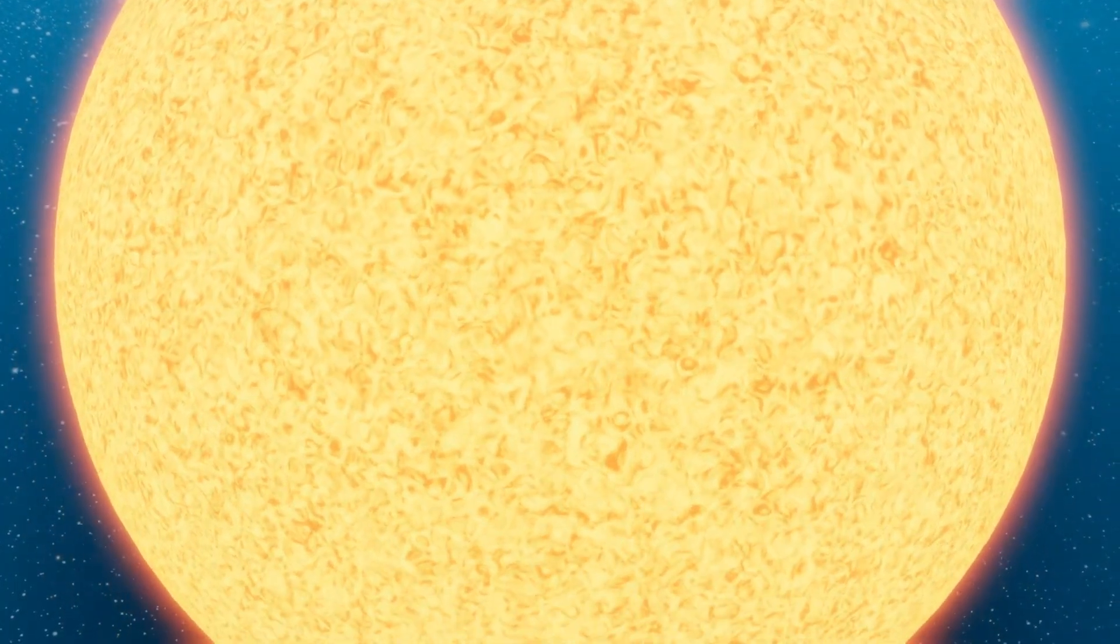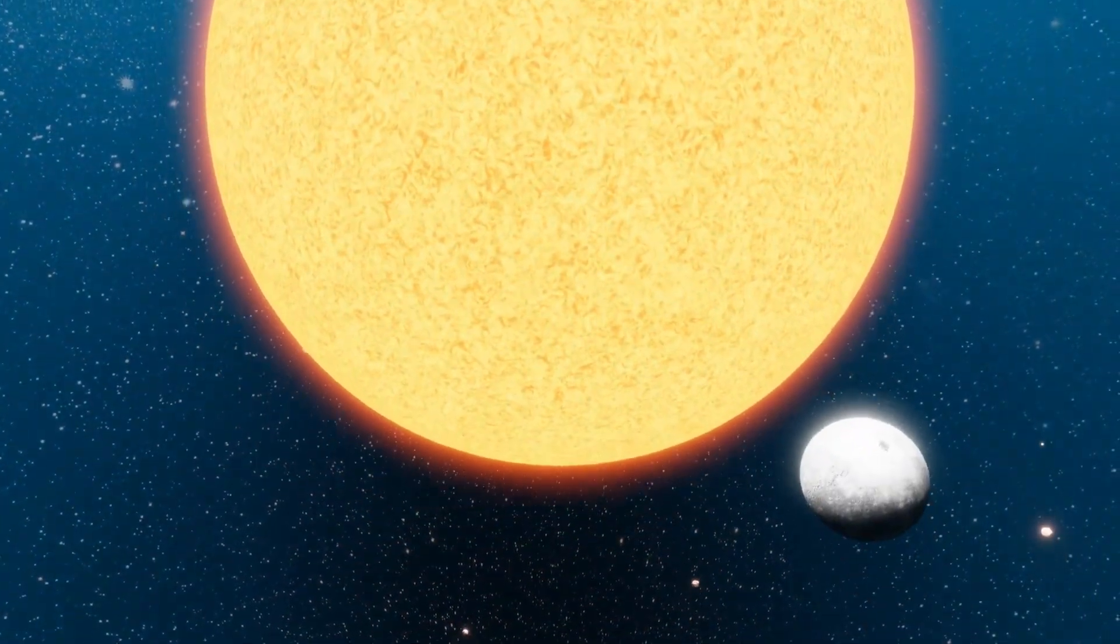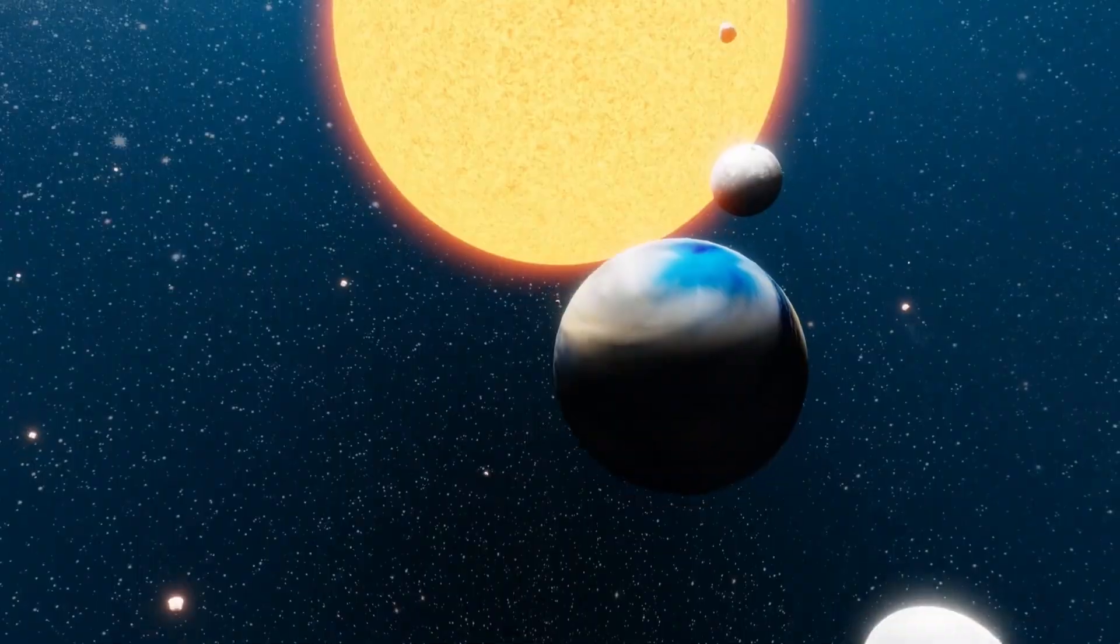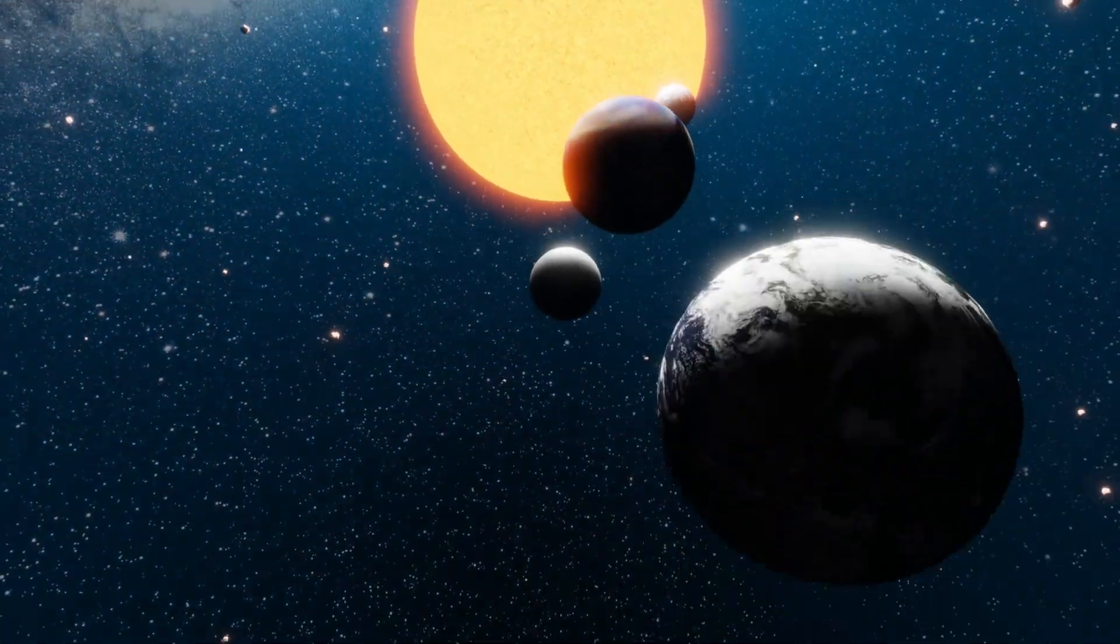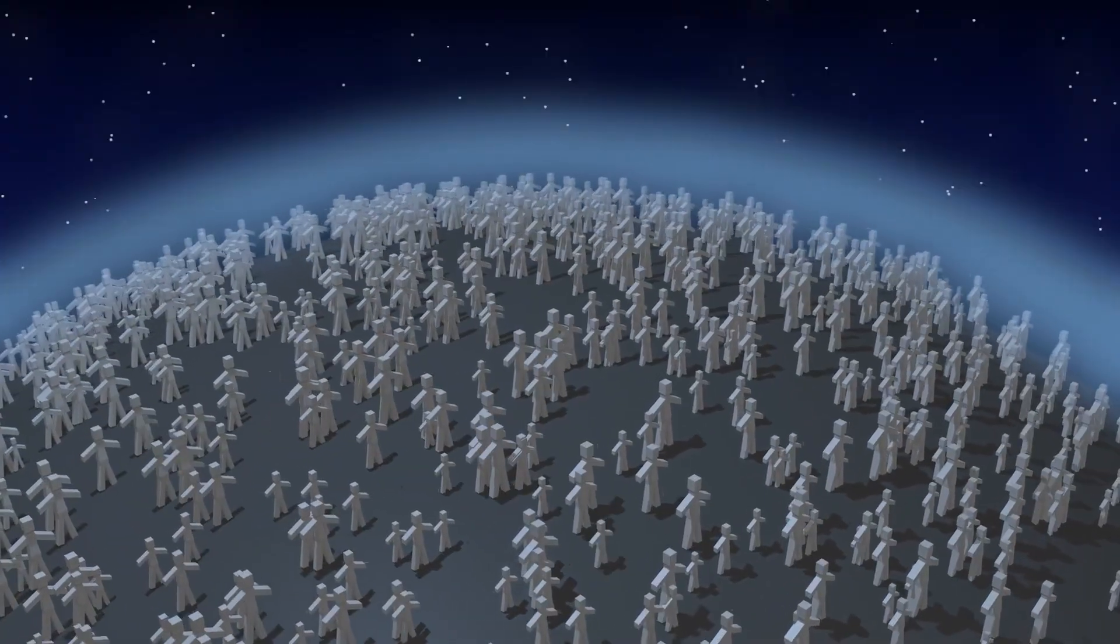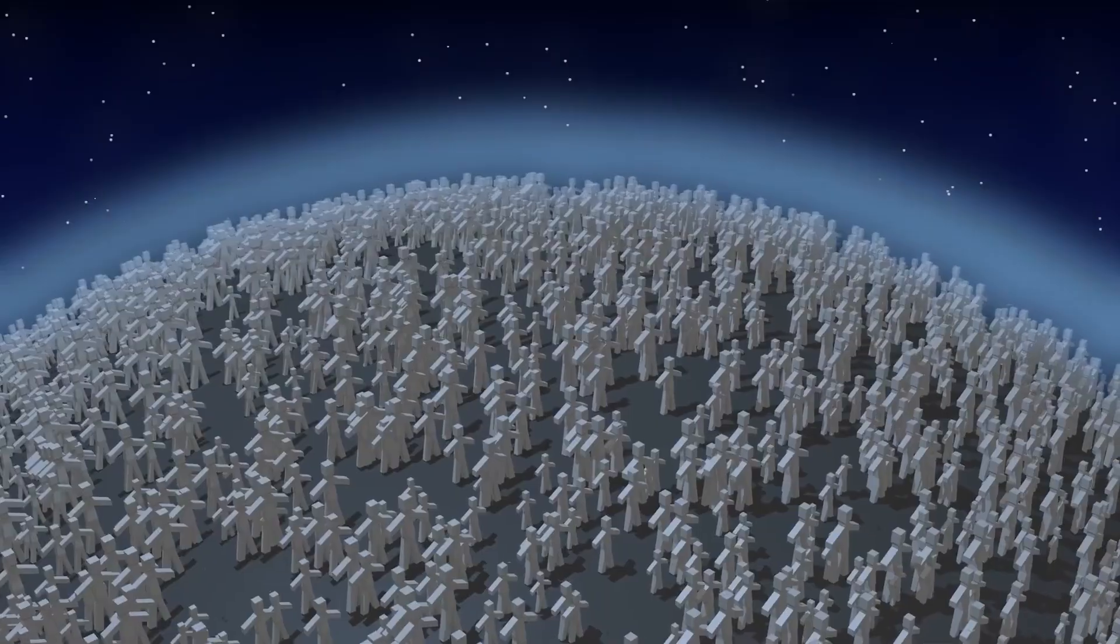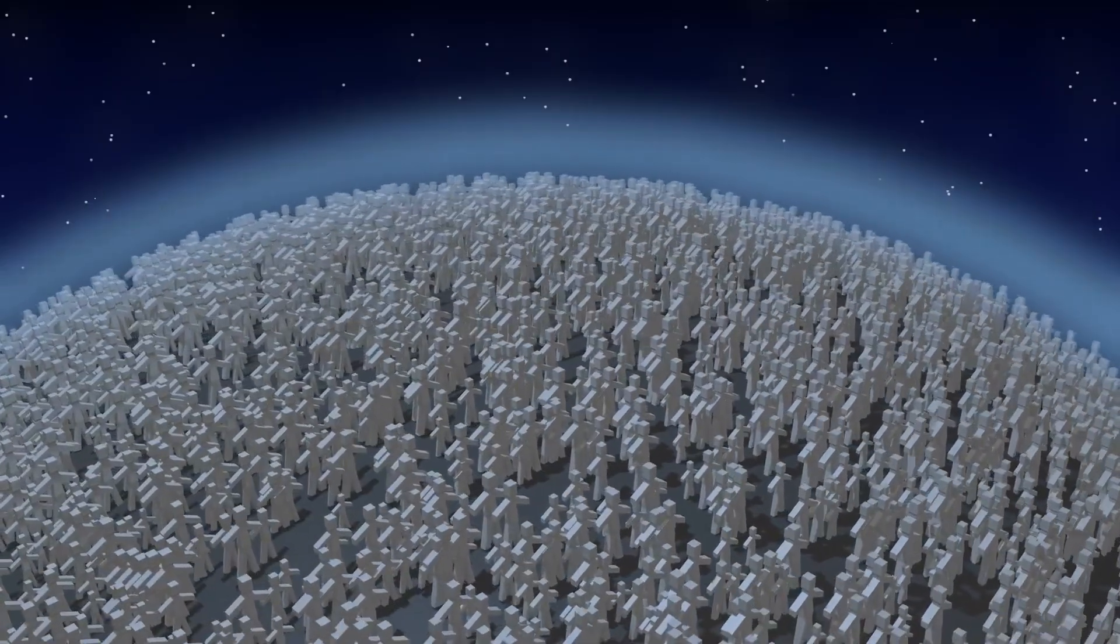The super-Earth Proxima Centauri c is Proxima Centauri b's companion on its orbit around the red dwarf star. The energy that Proxima Centauri b receives from its star is comparable to that which our planet receives from the sun. Does this imply that there is water, possibly even life on its surface?